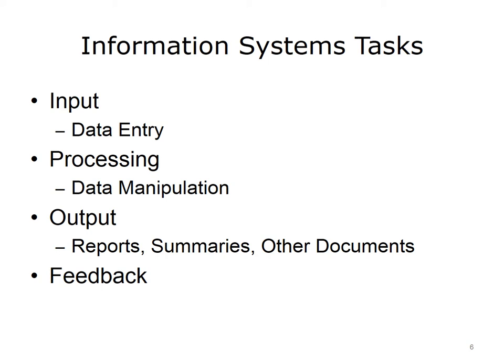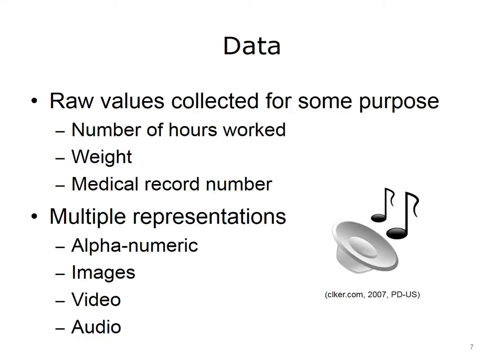Feedback potentially exists between all three tasks. For example, outputted reports can identify errors from data inputs. Such feedback may be used to improve the data entry process in the future. For this discussion, we define data as raw values that are collected for some purpose. For example, a payroll system would collect the number of hours that employees work in a pay period. A healthcare clinic would record the weight and medical record number of a patient. Data can be represented in multiple ways depending on the context — stored as alphanumeric characters, numbers, images, video, or audio, to name a few representations.